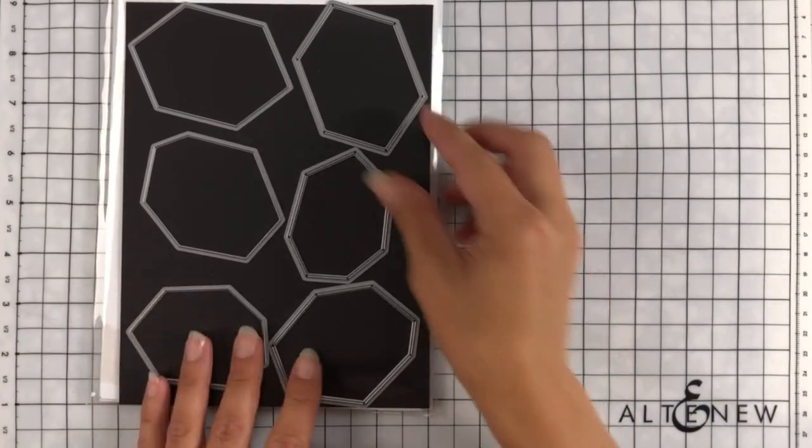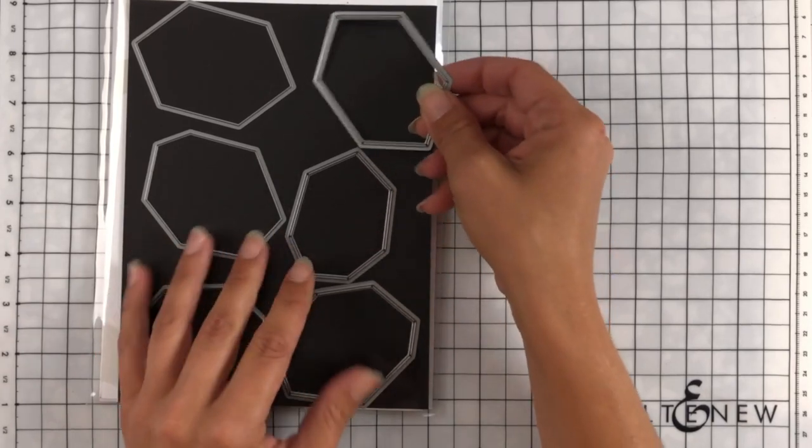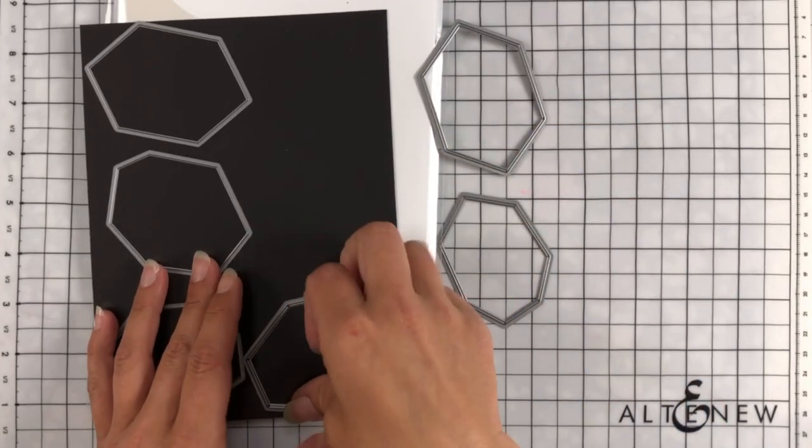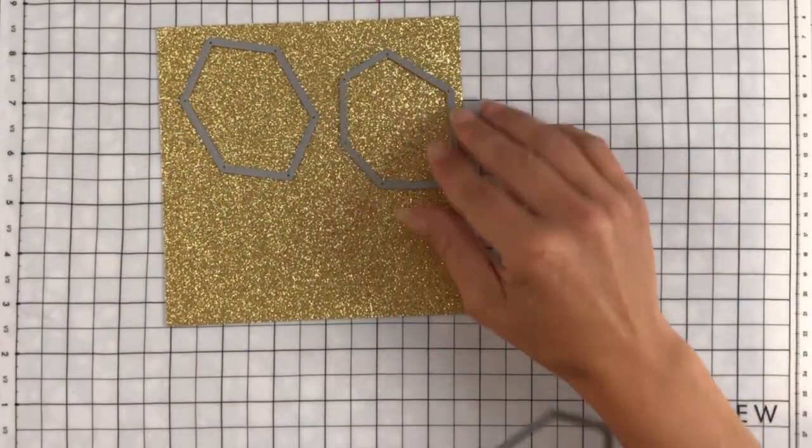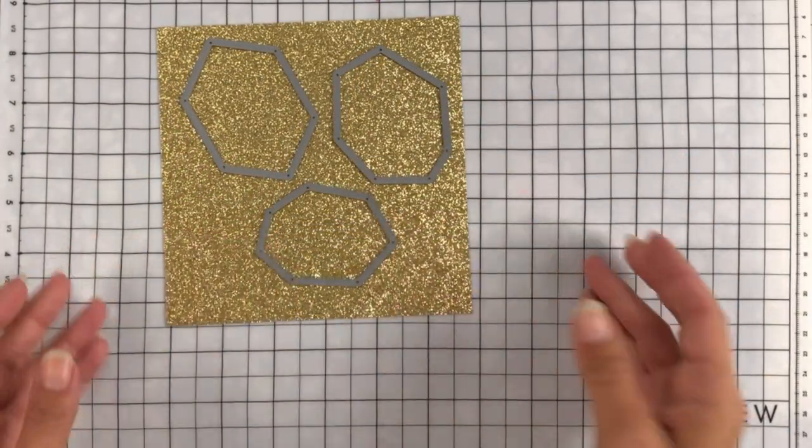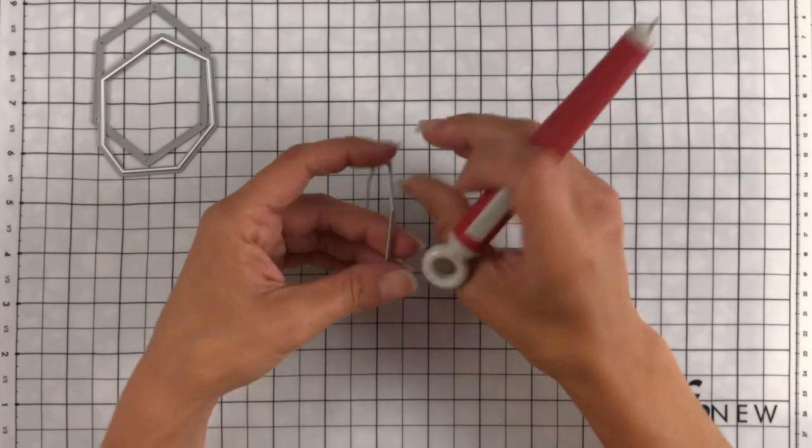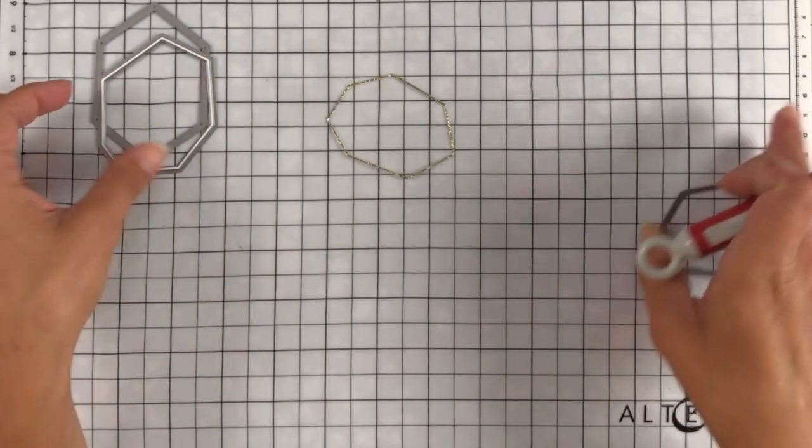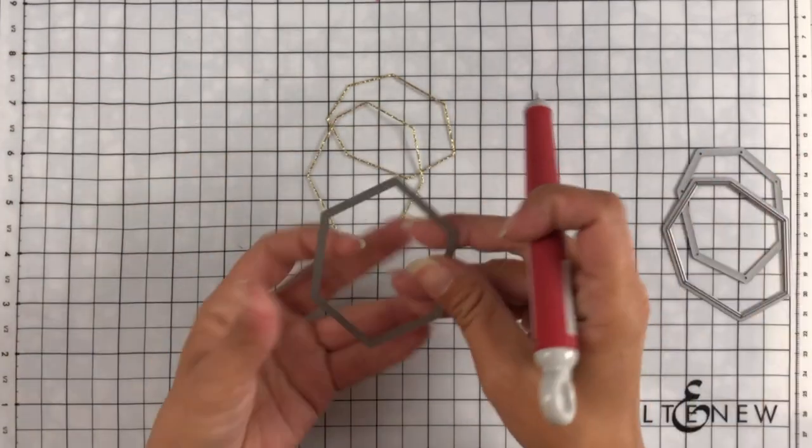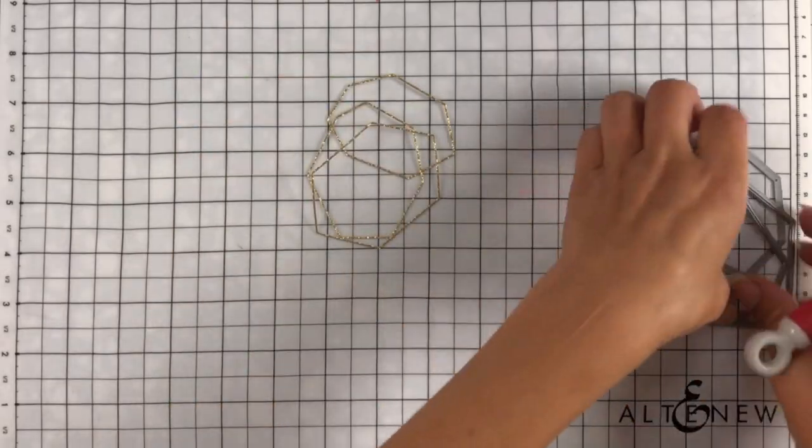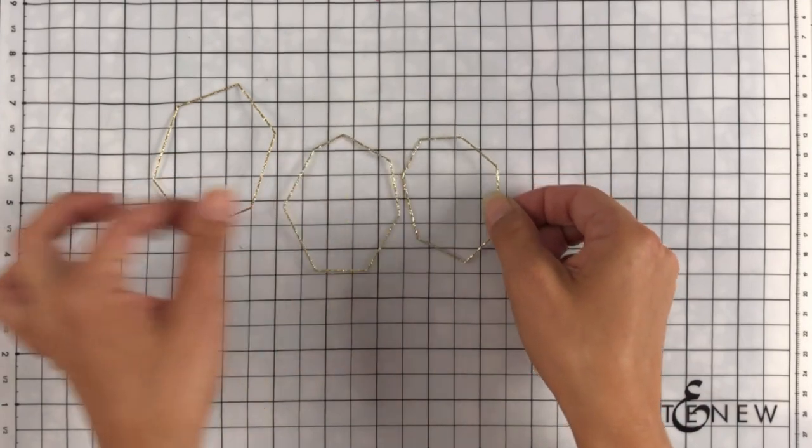This is the Geometric Frames die. And you'll notice that the ones on the right hand side have a frame in there. You'll see when I die cut it but it's going to cut out a little skinny frame. So I'm going to die cut all of these from gold cardstock. The other ones that were on the left hand side just cut out the shape. I wanted the actual frame. So once I ran those through my die cut machine I'm just carefully popping those out and you could see what a thin delicate frame this is. These are really gorgeous. And they were so pretty on the cards. So here's a look at all of those.